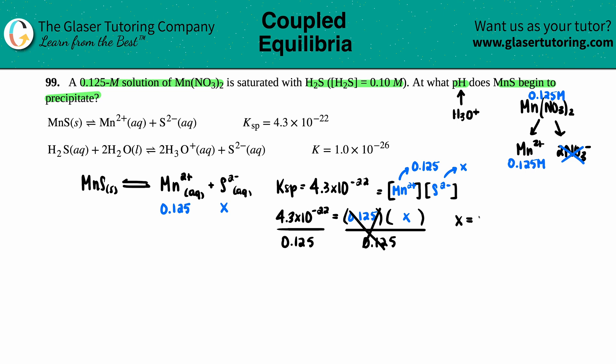So 4.3 times 10 to the negative 22nd divided by 0.125, I get 3.44 times 10 to the negative 21st molarity. And remember, that's the concentration for the S²⁻. So S²⁻ equals 3.44 times 10 to the negative 21st molarity.